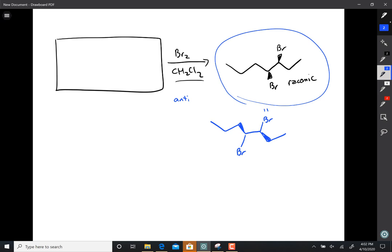We can double check to make sure we did the rotation right by figuring out R and S. That's an S chiral center. That is also an S chiral center. S, S checks out.